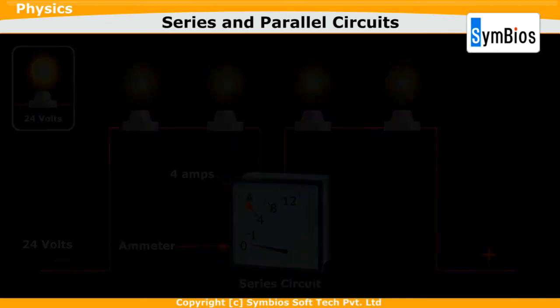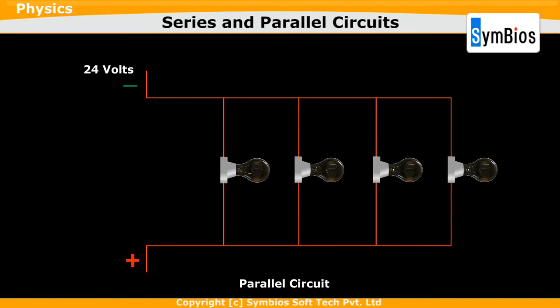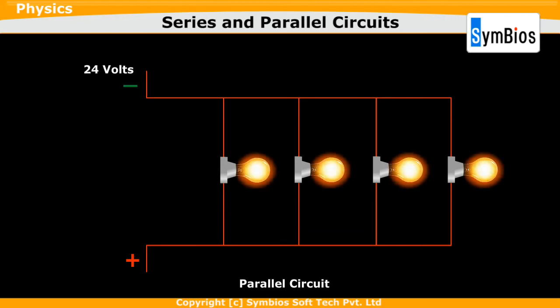Now let us construct a parallel circuit of the same 4 bulbs. In this circuit, the voltage across each of these bulbs is 24V. When we turn the switch on, each of the bulbs start glowing brightly. In this circuit, if we remove a bulb, the others will continue glowing.